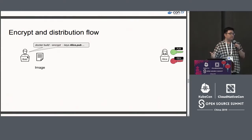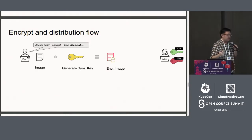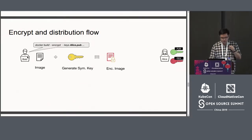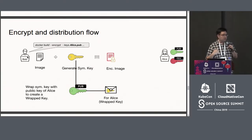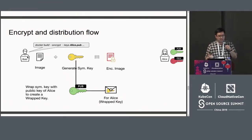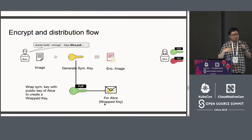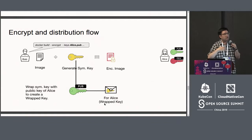Using our favorite crypto characters Bob and Alice: Bob wants to send an encrypted image to Alice. Bob does a build, which generates a symmetric key, and that symmetric key is used to encrypt the image. To get the symmetric key to Alice, Bob takes Alice's public key and creates what we call a wrap key — a message that contains the symmetric key as well as all the cryptographic metadata required to understand how to decrypt the image.